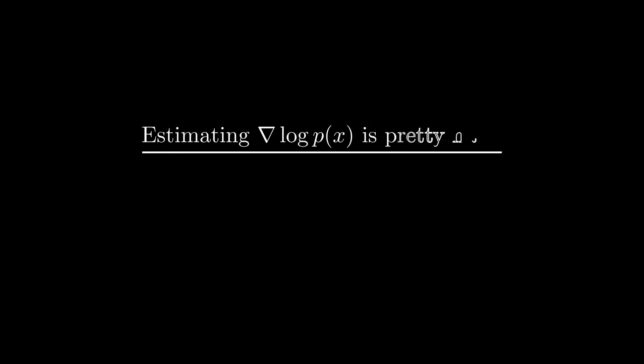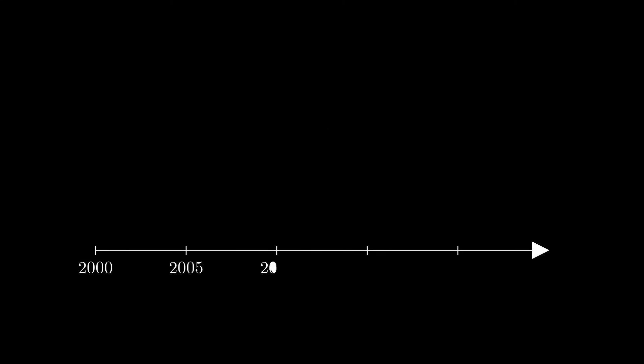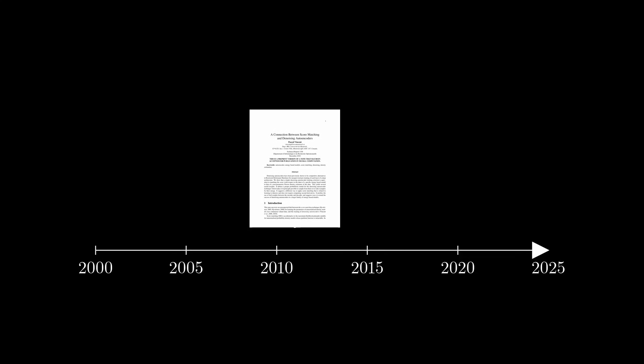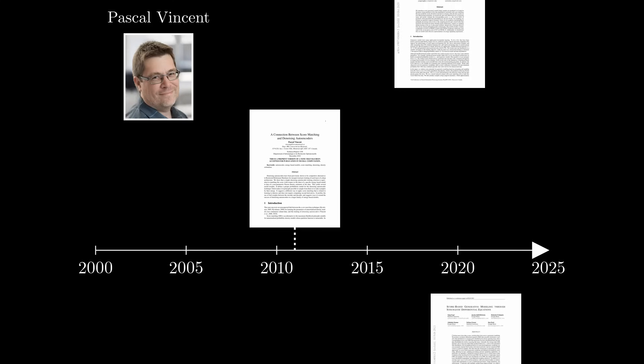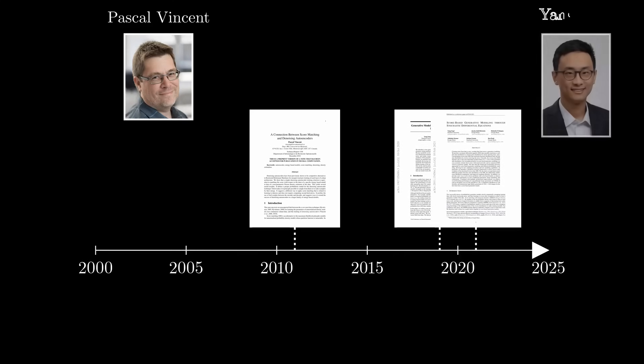We'll now take a quick tangent to talk about other means of obtaining this compass that we'll later use to generate brand new data. Until recently, approximating the score of an unknown data distribution, p of x, was actually a challenging problem. Today, we use neural networks that are trained to denoise images, but this approach wasn't always the norm. In fact, what we now call denoising score matching was only formally introduced in 2010 by Pascal Vincent in his paper titled, A connection between score matching and denoising autoencoders. At the time, this idea didn't gain the attention it deserved. It was only in the 2020s when Yang Song began publishing his work on score-based generative models, that denoising score matching really became popular. This is because denoising is also the training objective of diffusion models, which are still the state of the art in image generation as of 2024.